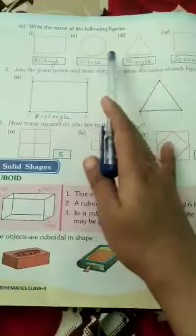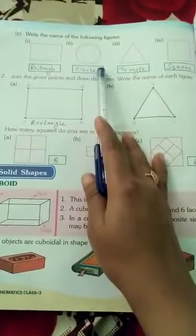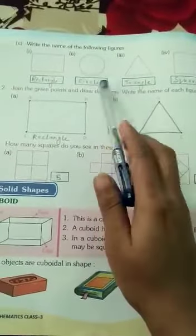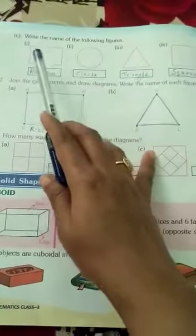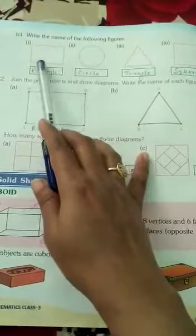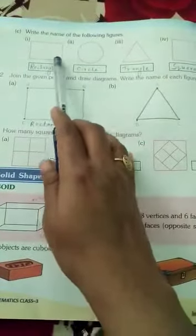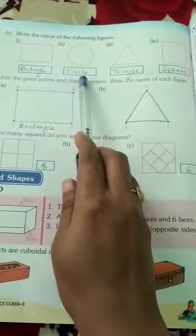Figure is given and you have to write the name, which figure is this? This has both opposite sides equal. It is rectangle. It is circle. Right, circle. Triangle. Square.